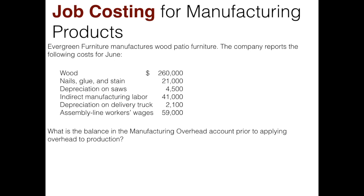Let's look at each item. We're creating wood patio furniture, so wood is probably a direct material — it would not end up in the overhead T-account. Nails, glue, and stain are a small cost of the product, not a huge prime cost, so that's probably an indirect material and would be considered part of overhead. Depreciation on the saws — saws are used to cut the wood as part of the manufacturing process — so that's other overhead, even though it doesn't have the word 'plant' or 'factory' on it.